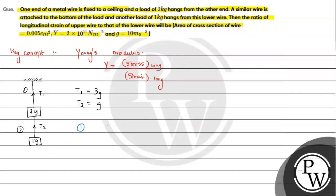Longitudinal strain for the first wire: it is longitudinal strain for the first wire, so it will be equal to stress, which is T₁ upon A, divided by Young's modulus. So this will be our value: 3g upon AY.